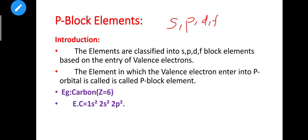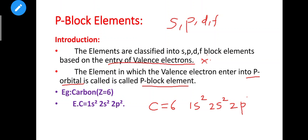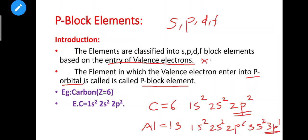Elements are classified into S, P, D, and F block elements based on the entry of the valence electron. P-block elements are those in which the valence electron enters into the P-orbital. For example, carbon has atomic number 6, with electronic configuration 1s2 2s2 2p2 — it ends in 2p, so it is a P-block element. Similarly, aluminium with atomic number 13 has configuration 1s2 2s2 2p6 3s2 3p1 — it also ends in the P-orbital, so it belongs to P-block elements.